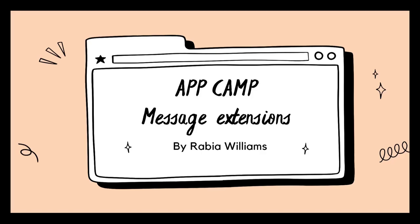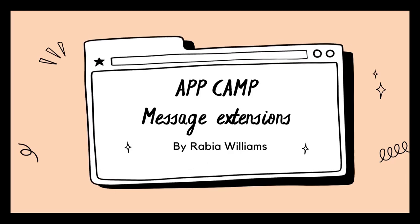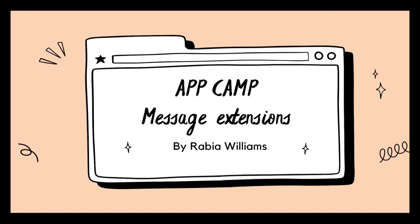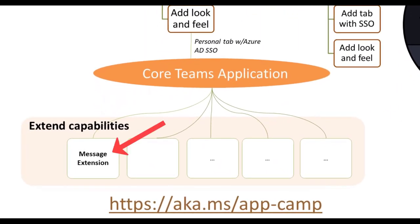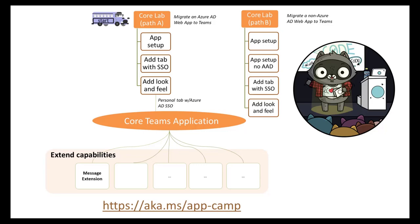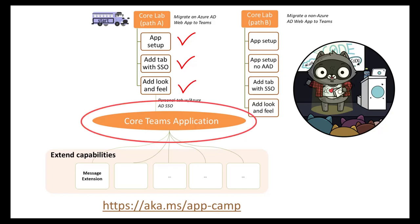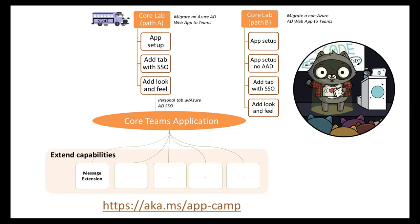Hello and welcome to Teams AppCamp. In this video, let's walk through the lab to build message extensions. I'm Rabia Williams, Cloud Advocate at Microsoft. This video is to accompany the message extension lab in AppCamp. Note that you'll need to complete labs A01 to A03, which builds out the core application before starting this one, as they build on one another. You can find all the AppCamp labs at aka.ms/app-camp.